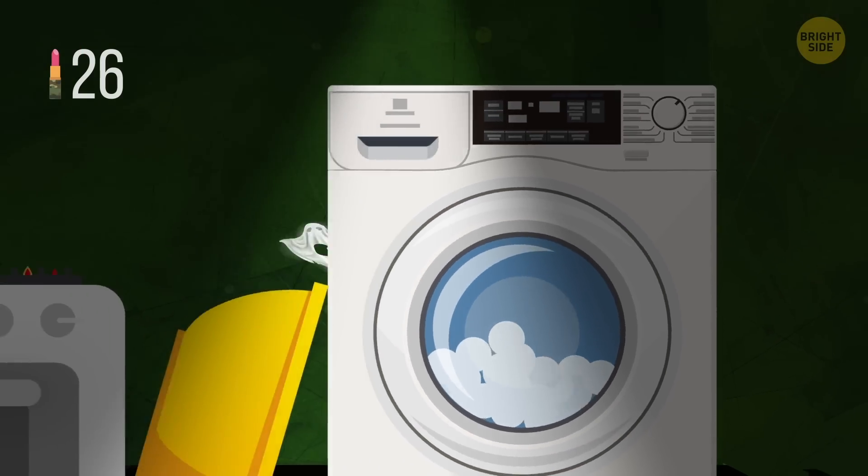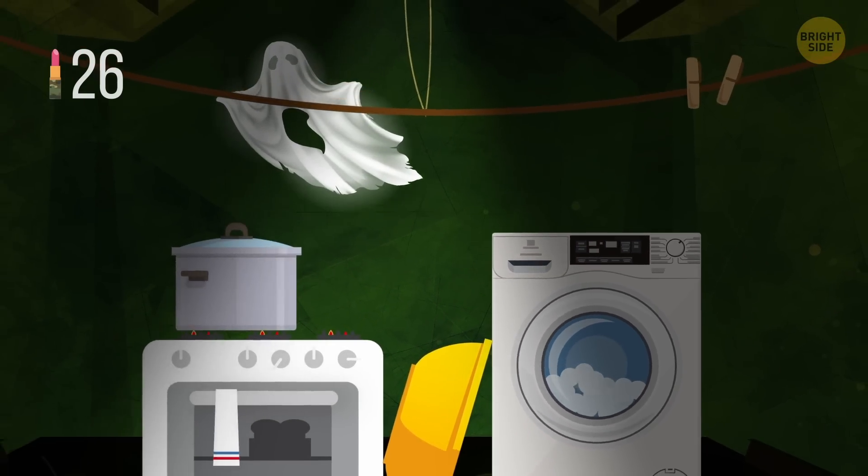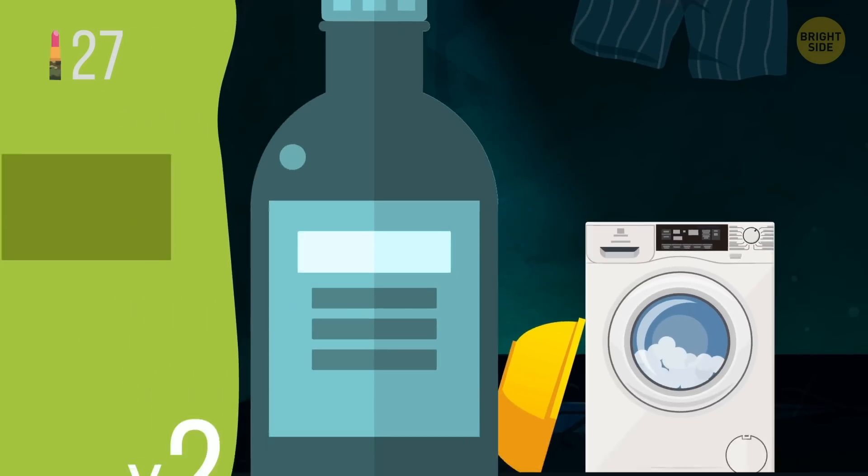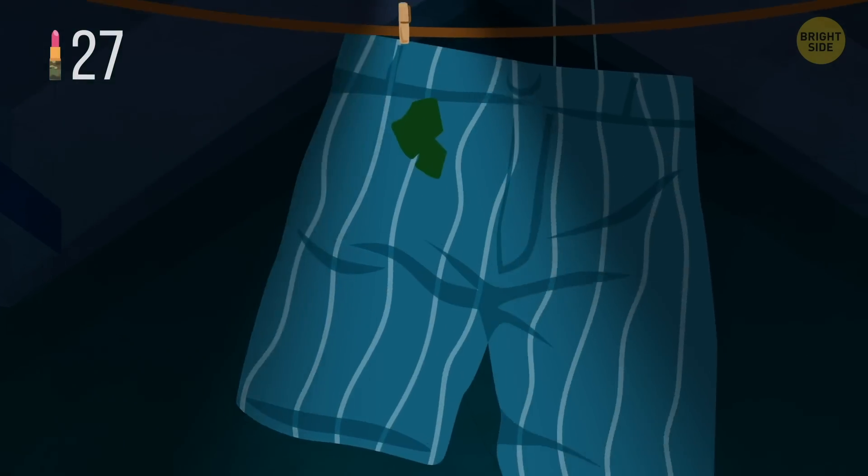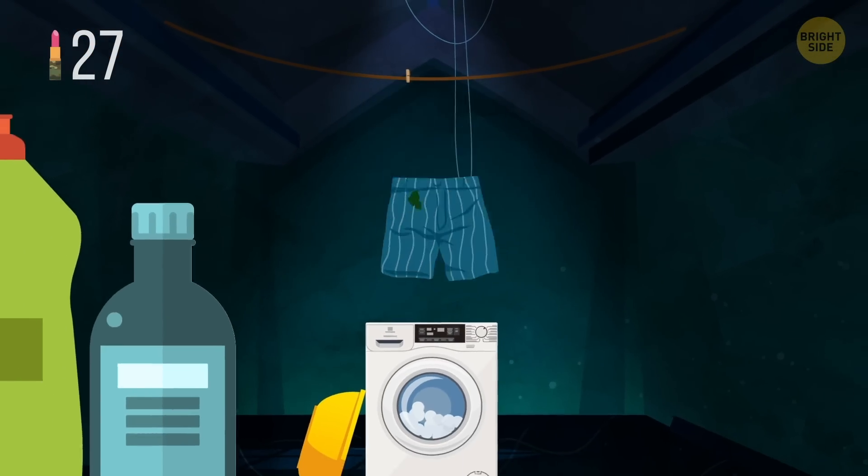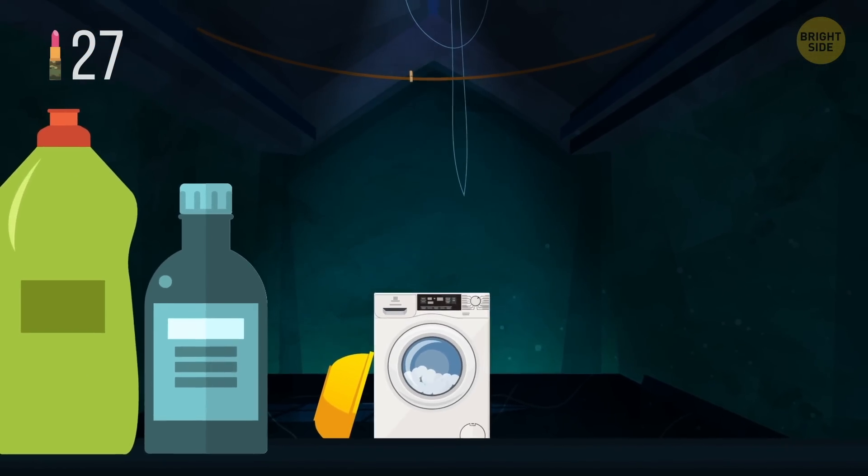If your jeans have grass stains on them, mix 2 tablespoons of hydrogen peroxide with 1 tablespoon of dish soap. Apply this mixture on the grass stains, let it sit, then wash your jeans as usual.